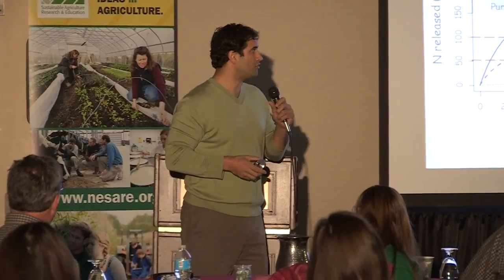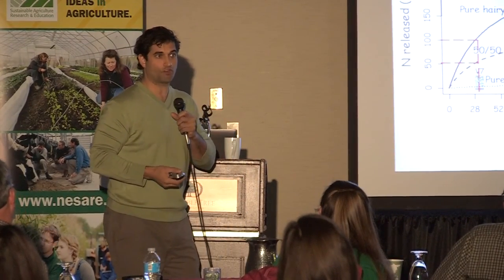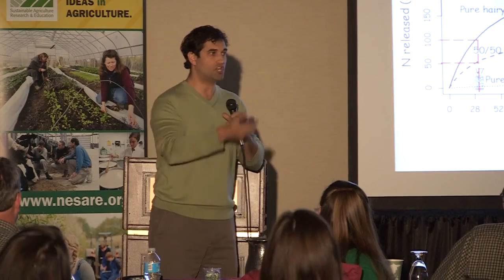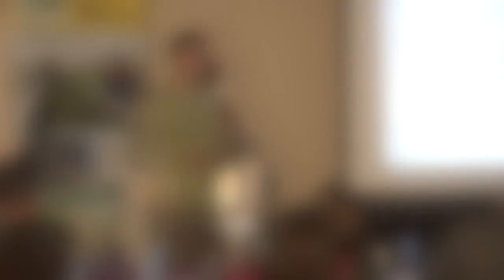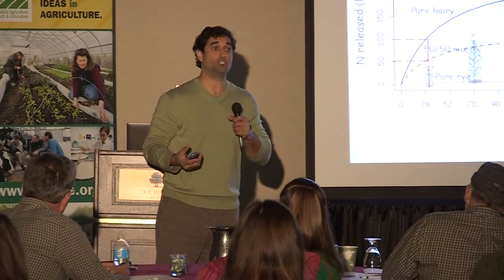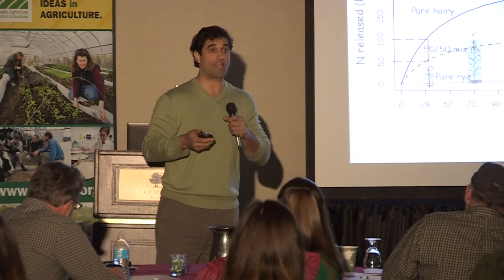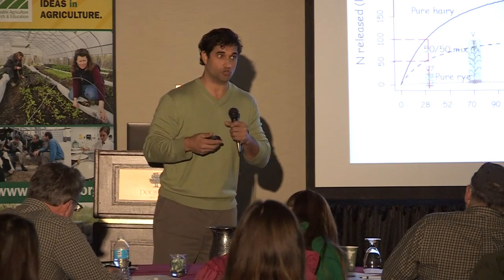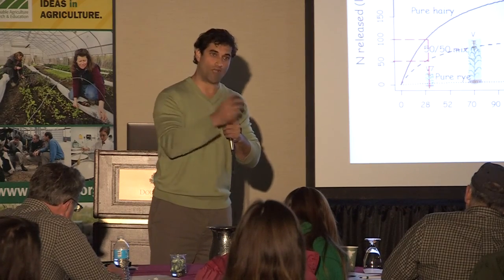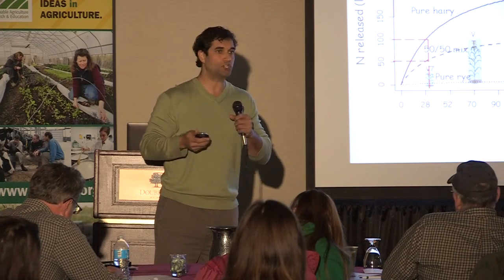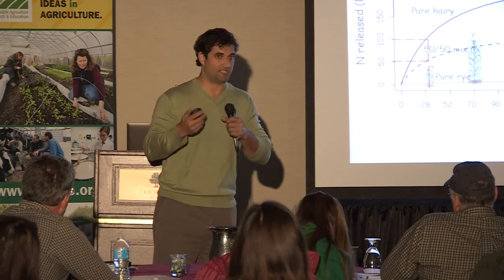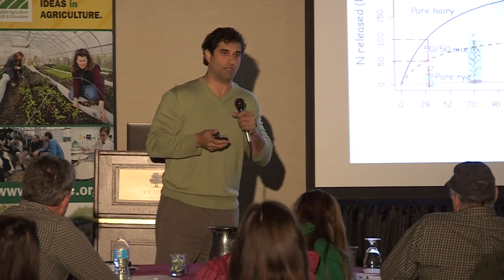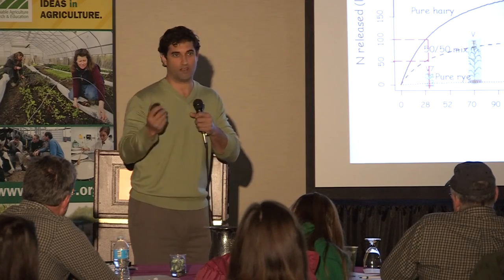We're measuring N release from litter bags over time — measuring the N contents of the plant material, how much biomass is in there, and how N is being released in both till and no-till applications. We track how much is being released from the cover crop, available in the soil, and taken up by the corn plant over time. It's not a fully closed nitrogen budget since we're not measuring leaching, though we did measure greenhouse gases for some sense of denitrification.